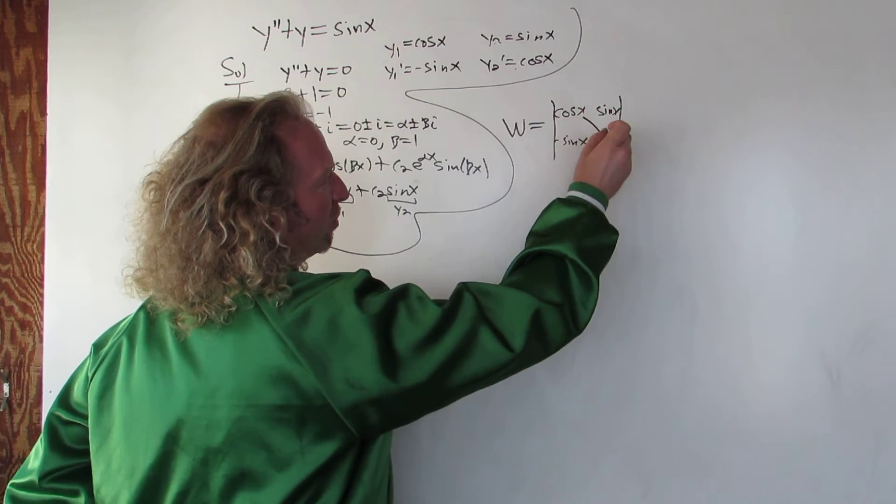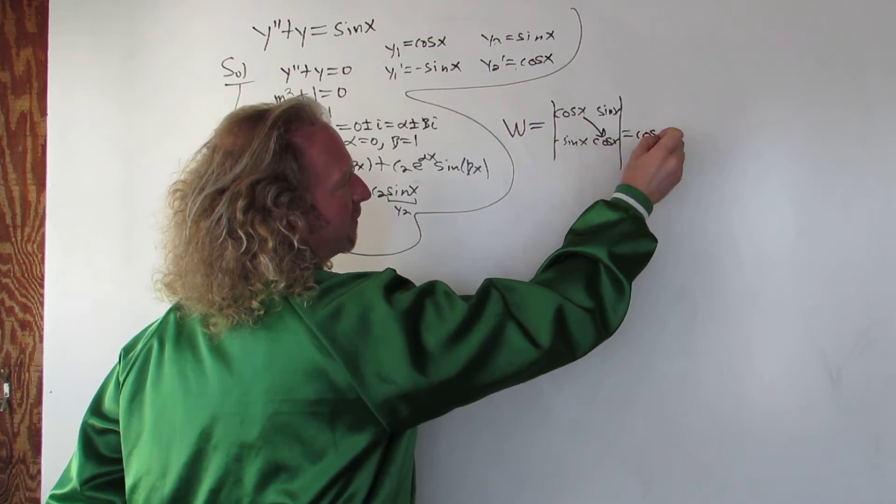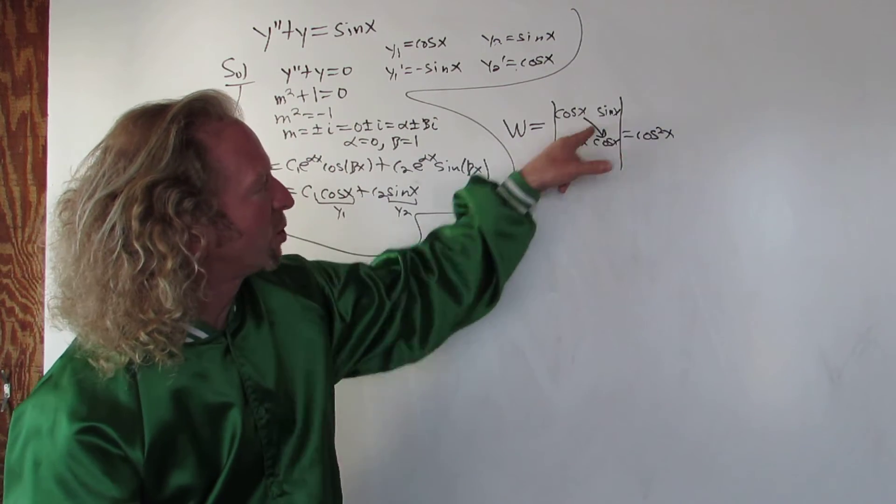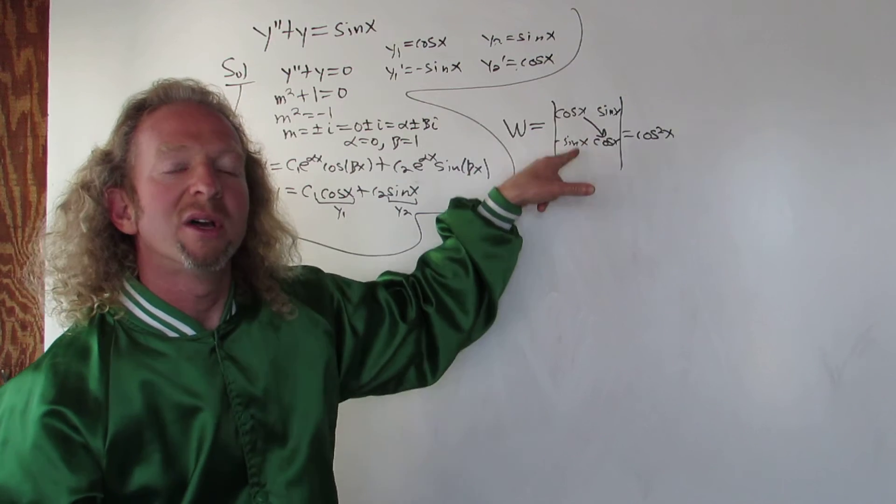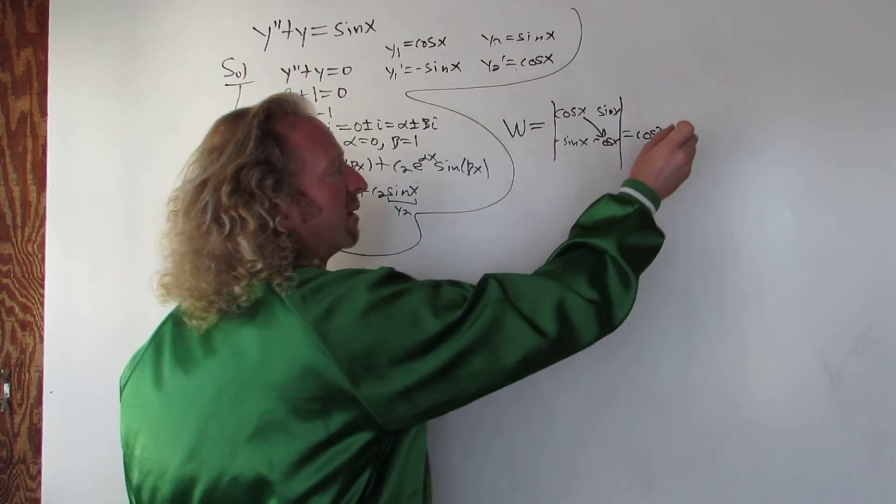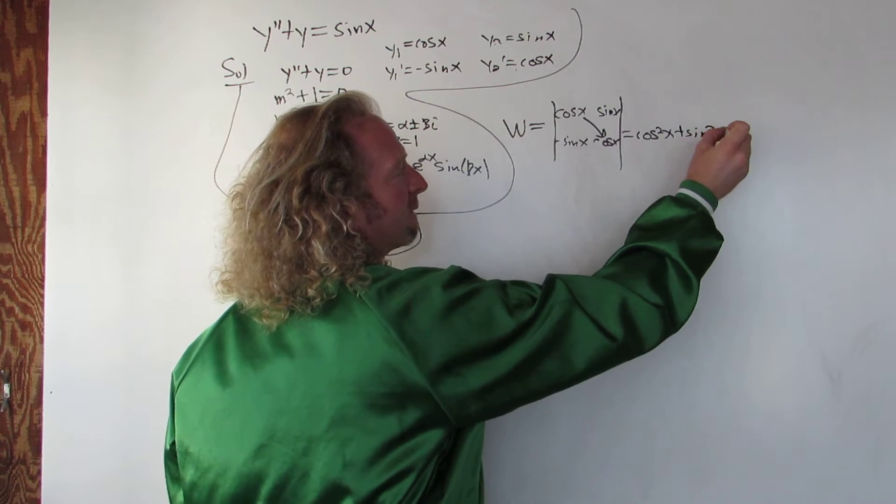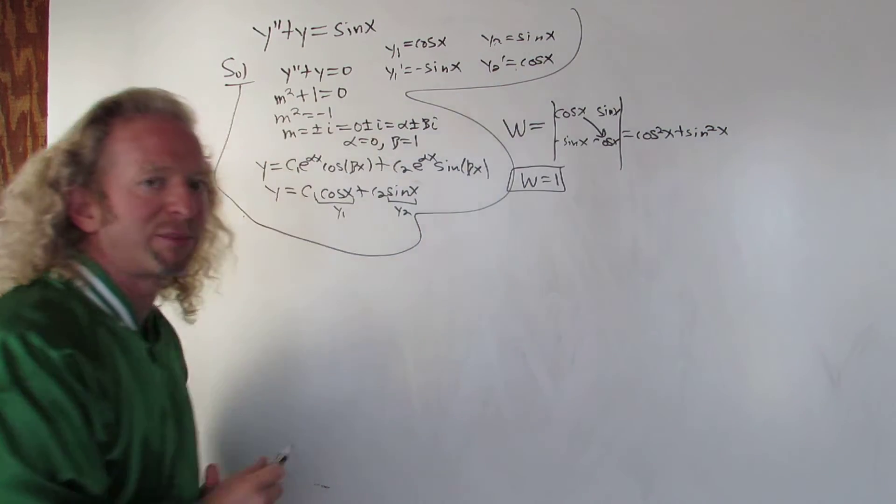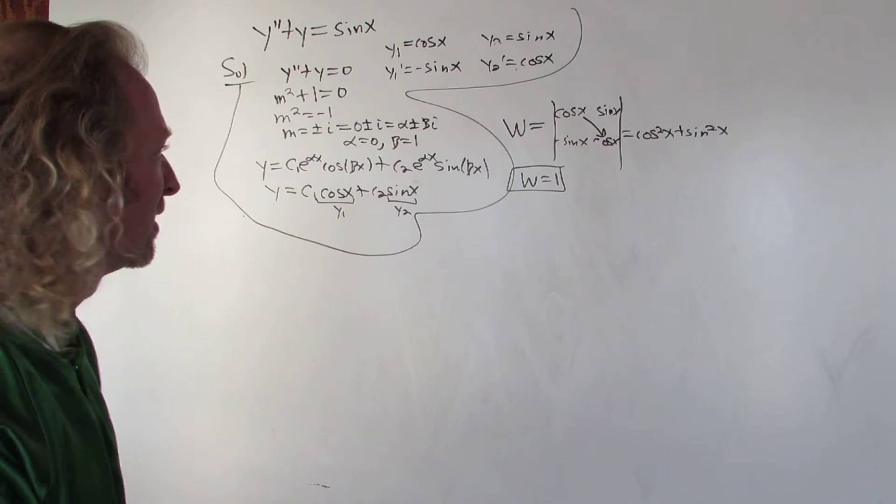Then you take the determinant. That's the Wronskian of y1 and y2. You multiply this times this, you get cosine squared. Then it's minus, but there's already, then you multiply these, but that's minus also. So it's minus minus, so it's plus sine squared. So w is equal to 1.